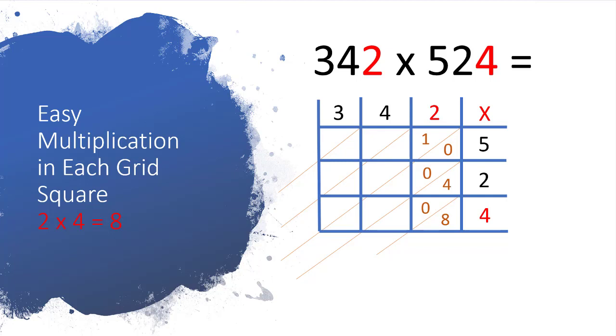Now let's move across to the next column. 4 times 5 is 20, so we put the 2 in the tens and a 0 in the units. Just write it as you would normally write it but just split it across that diagonal. Let's move down to 4 times 2 which is 8, and then move down once more. 4 times 4 is 16.